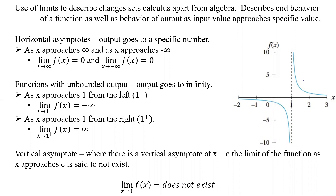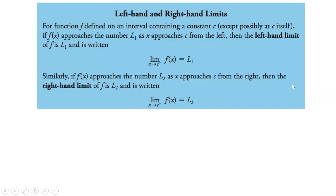If both sides had gone to negative infinity, or both to positive infinity, or both to the same value, then we would have a limit. But because they go to opposite ends, we don't have a limit. So what we were looking at there was left-hand and right-hand limits.